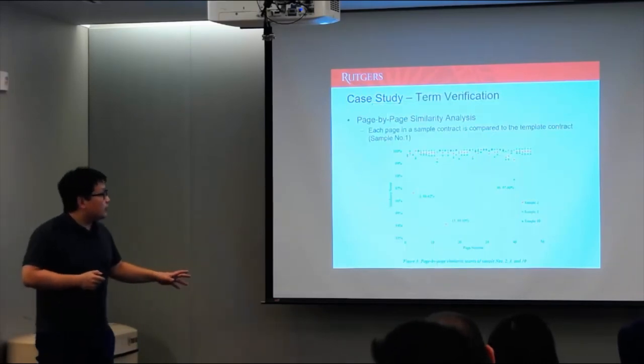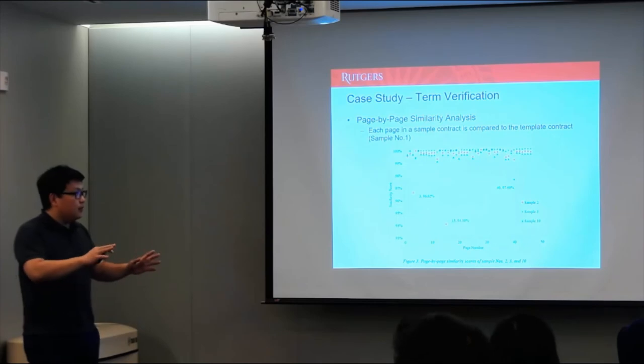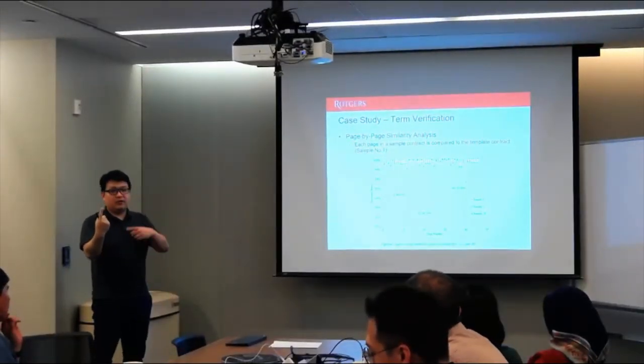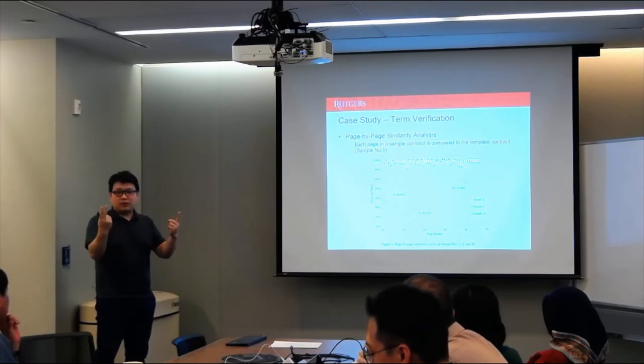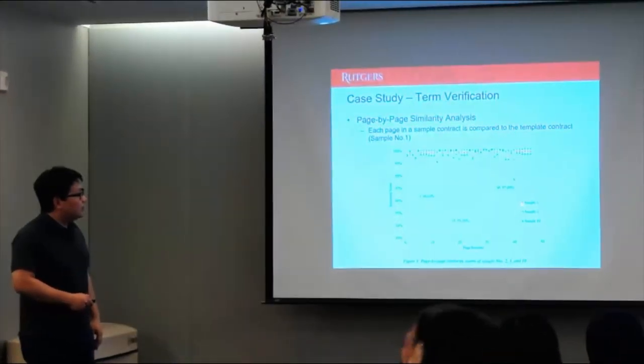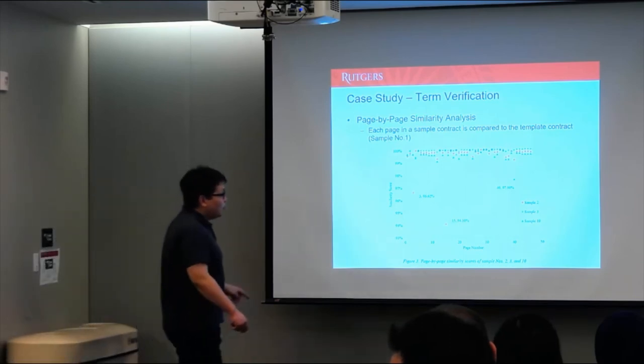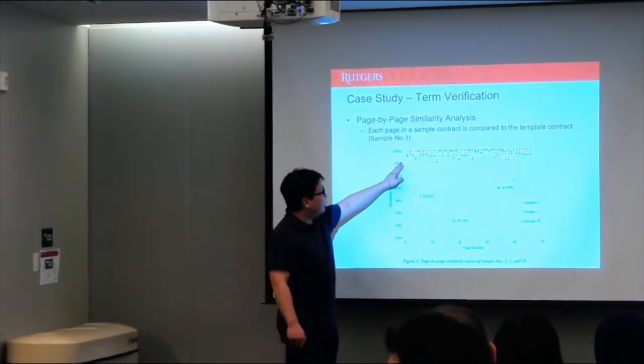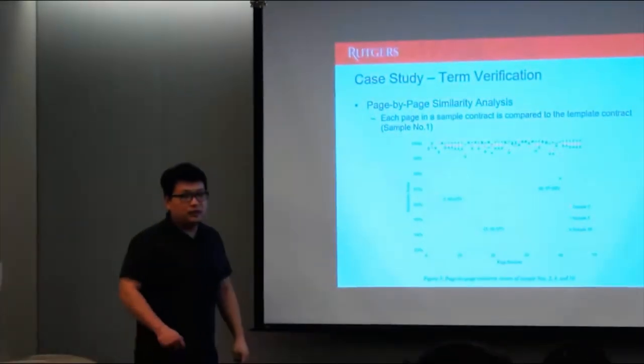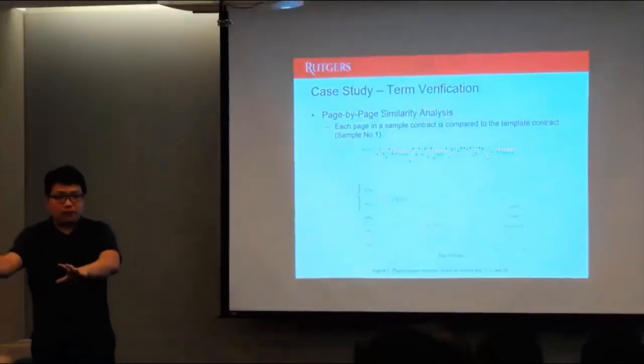Then, the last one, what we did is term verification. We want to see whether the template itself has been modified. So we compare page by page. So, the first page of contract number two to the first page of contract number one, the second page of contract number two to the second page of contract number one. So we do this nine times to apply to all those sample contracts. So what you see here is the orange dot is sample number two. You see there's two outliers here showing these two pages are significantly different from the page in contract number one. And a regular one would be like sample number three, the gray diamond, almost always above that. So these two pages are actually where we subtracted one paragraph and put it to another.